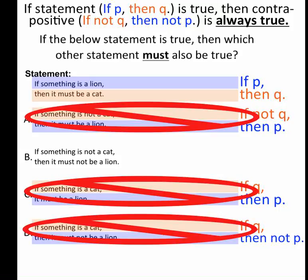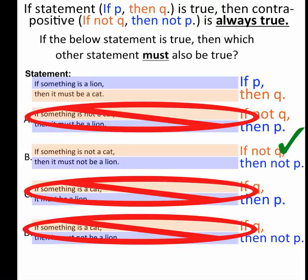But this statement, if something is not a cat, if-not-q, then it must not be a lion, then-not-p. That is my contrapositive, so therefore my answer to this question is b.